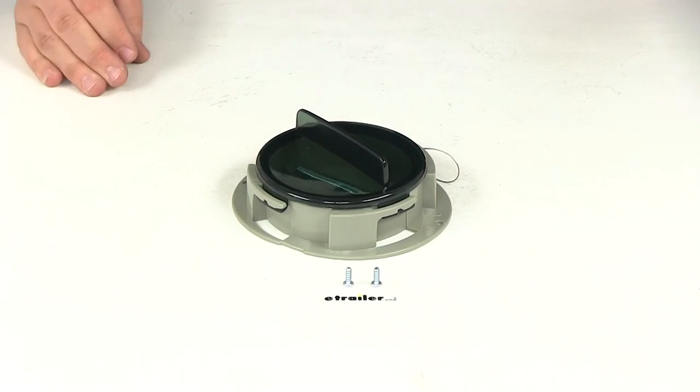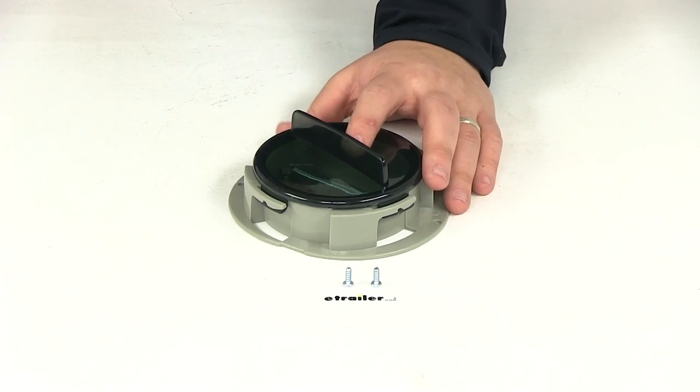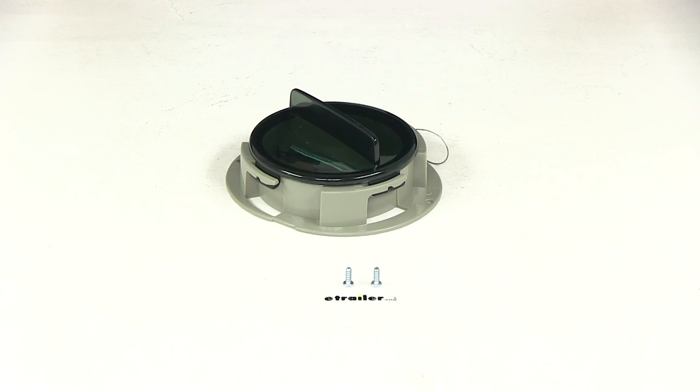That's going to do it for a review of part number GT-1007. This is the document holder with a cap from Redline Trailer Cargo Control.